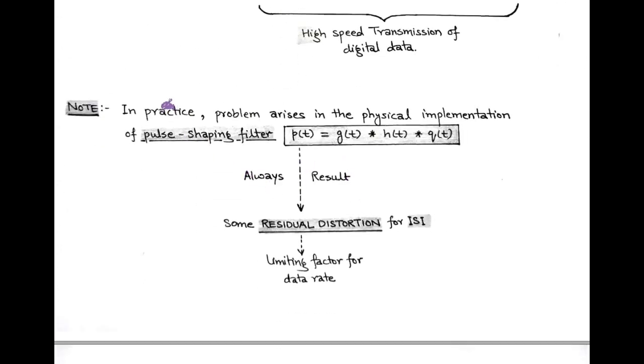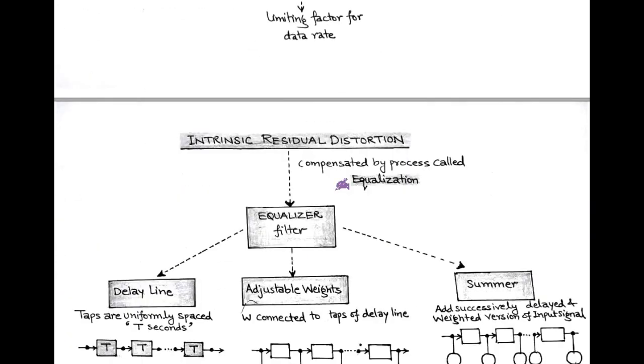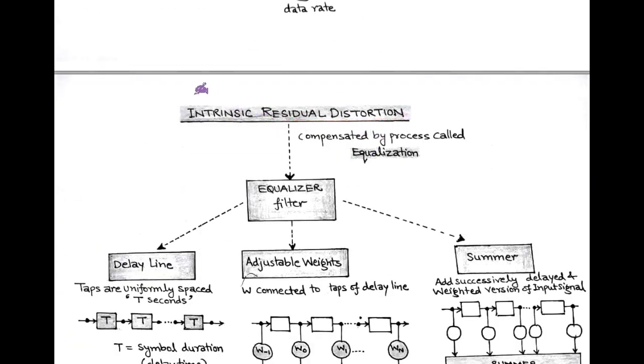But in practice, the problem arises in the physical implementation of pulse shaping filter P(T), which is simply the double convolution of impulse functions G(T), H(T), and Q(T), corresponding to transmit filter, channel, and receiver filter respectively. This pulse shaping filter P(T) always results in some residual distortion for inter-symbol interference, and this becomes a limiting factor for data rate and affects the transmission speed of digital data. In order to compensate this residual distortion, that is a type of intrinsic distortion, a process of equalization is performed.